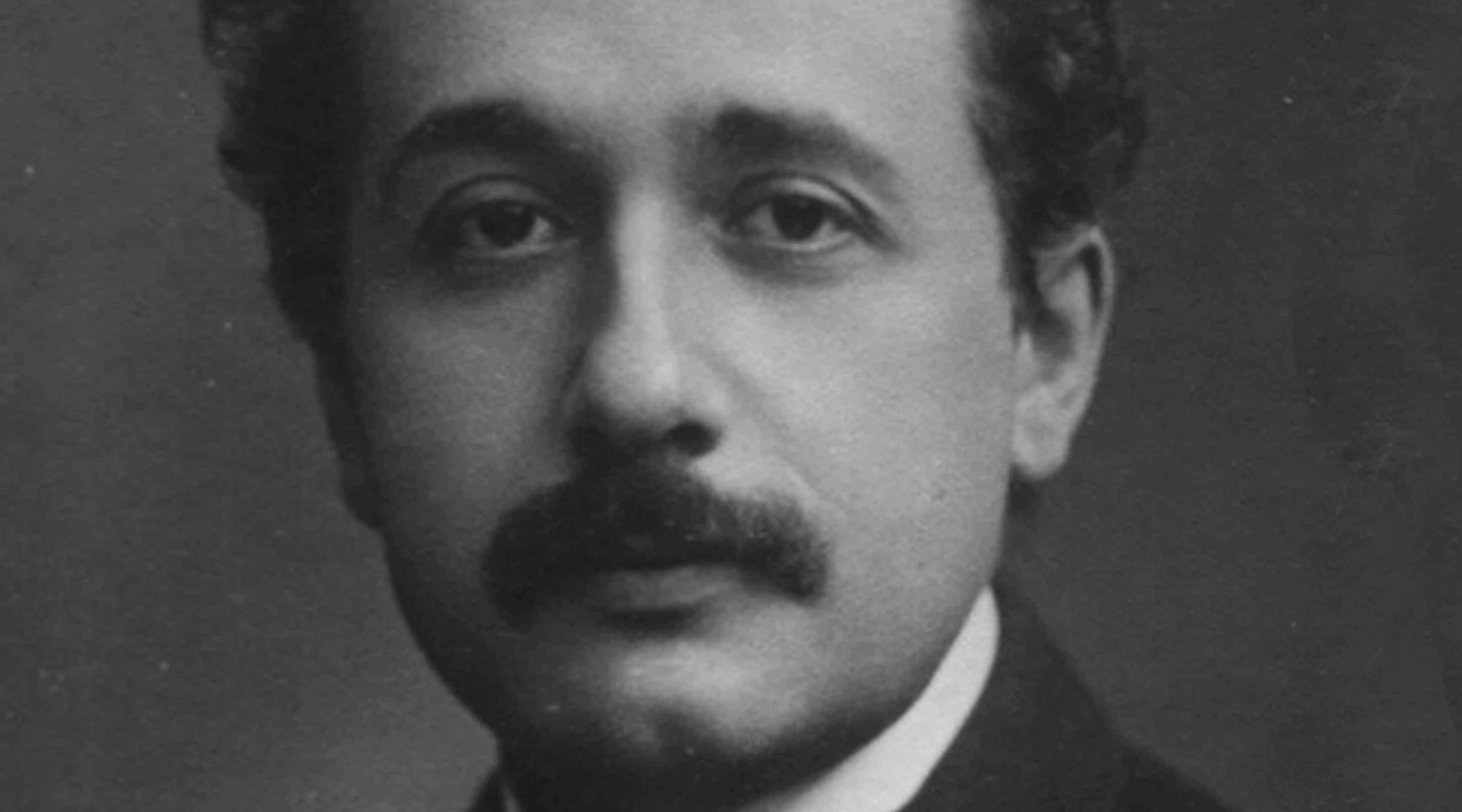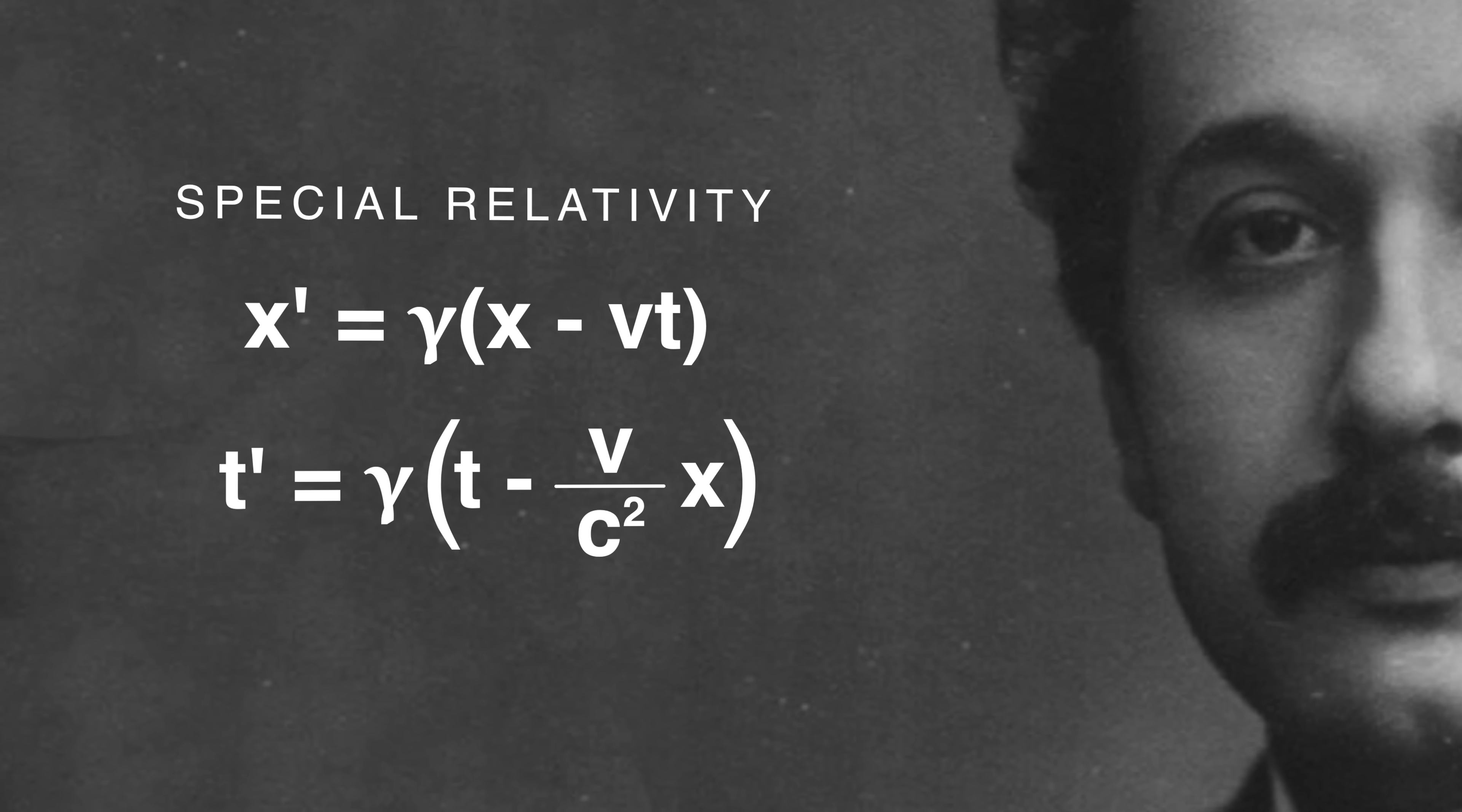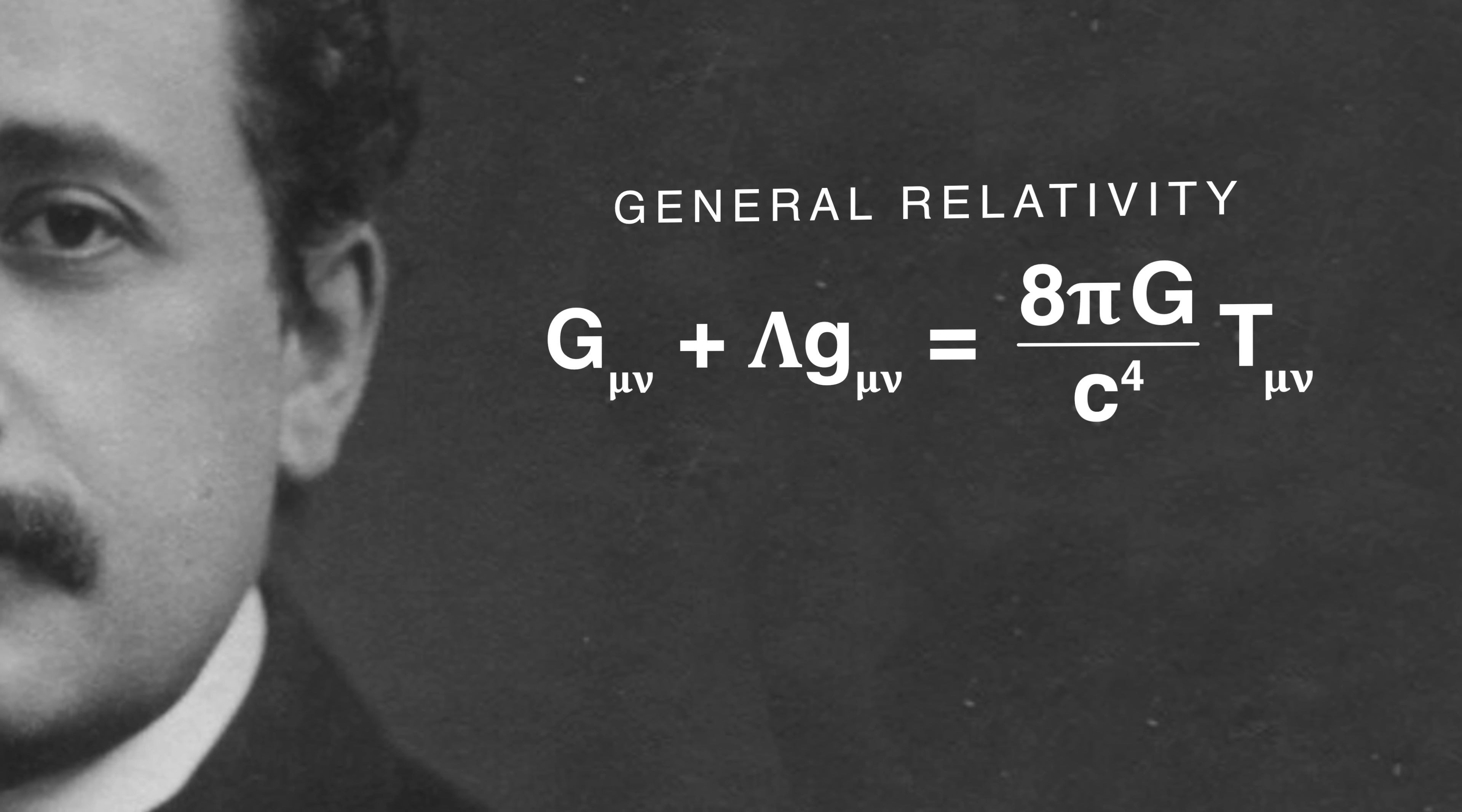Einstein's theory came in two categories. One was his special theory of relativity, which mostly dealt with objects traveling at constant velocity, and the second was his theory of general relativity with objects whose velocity is changing.